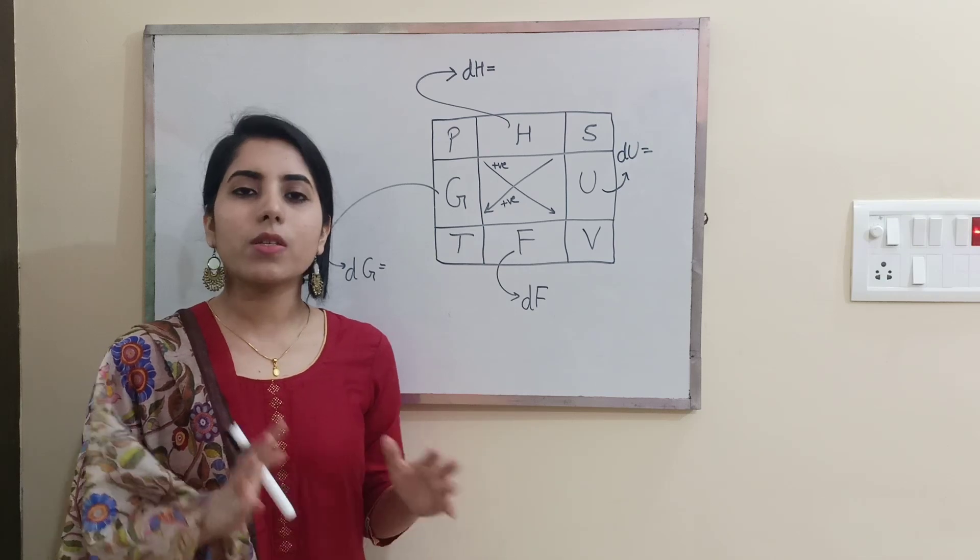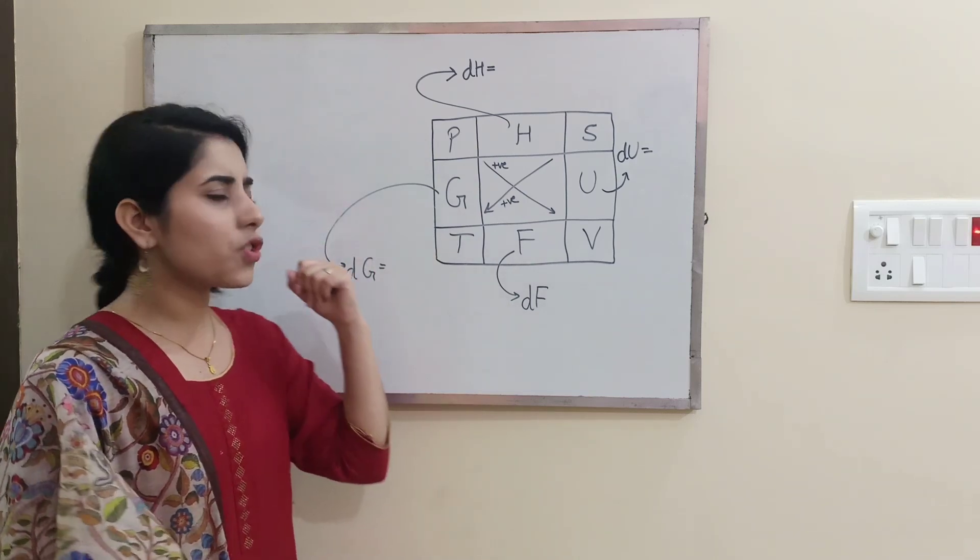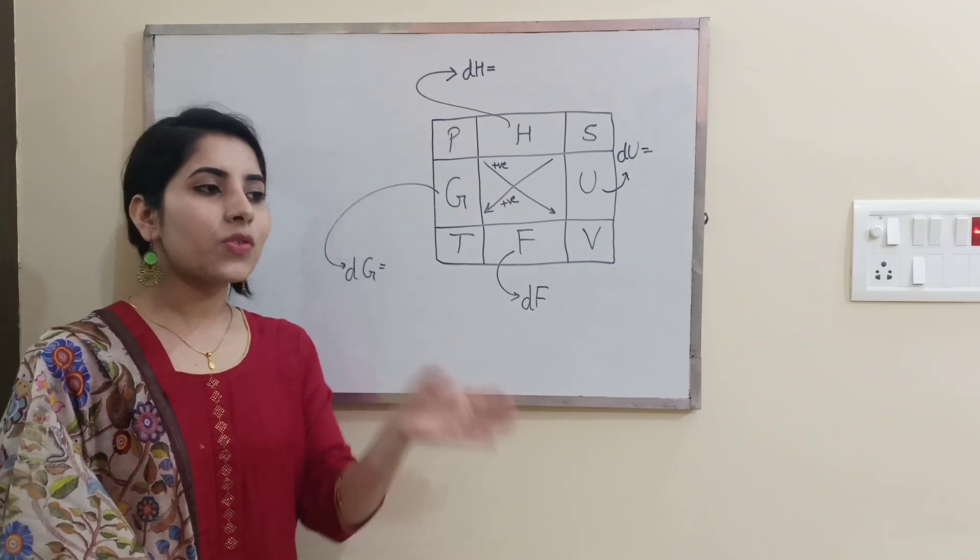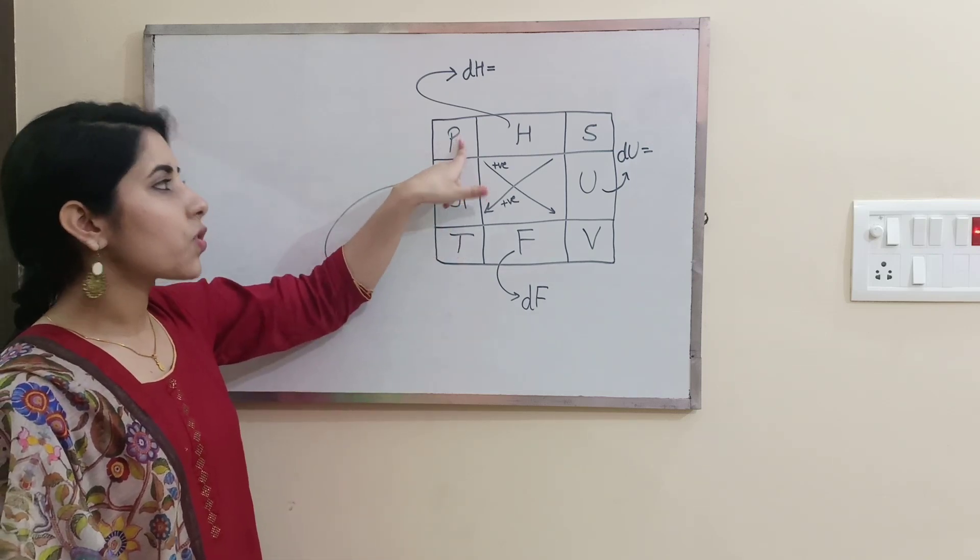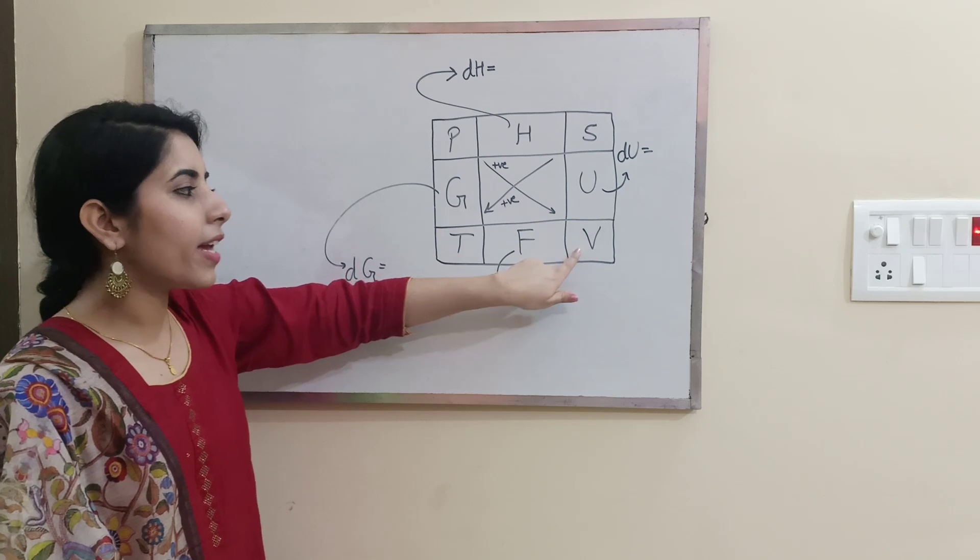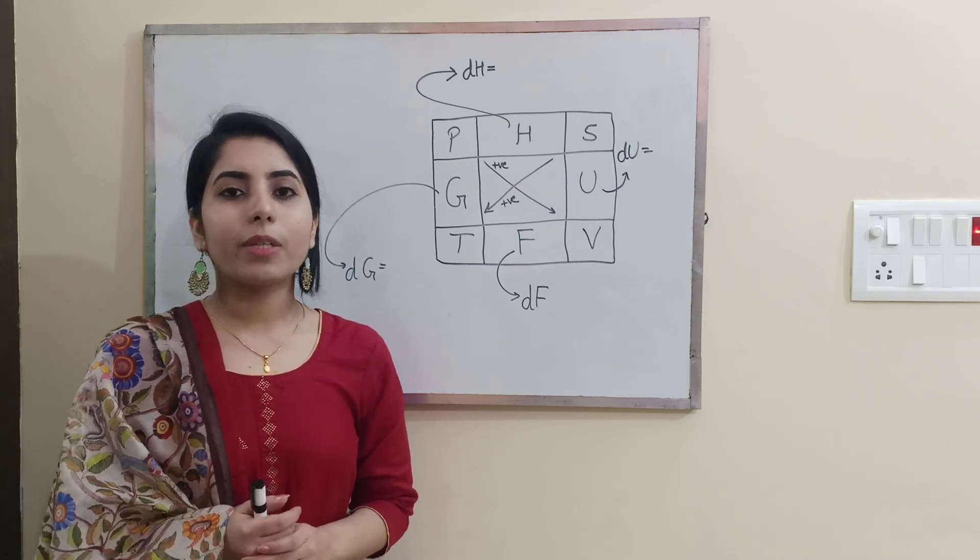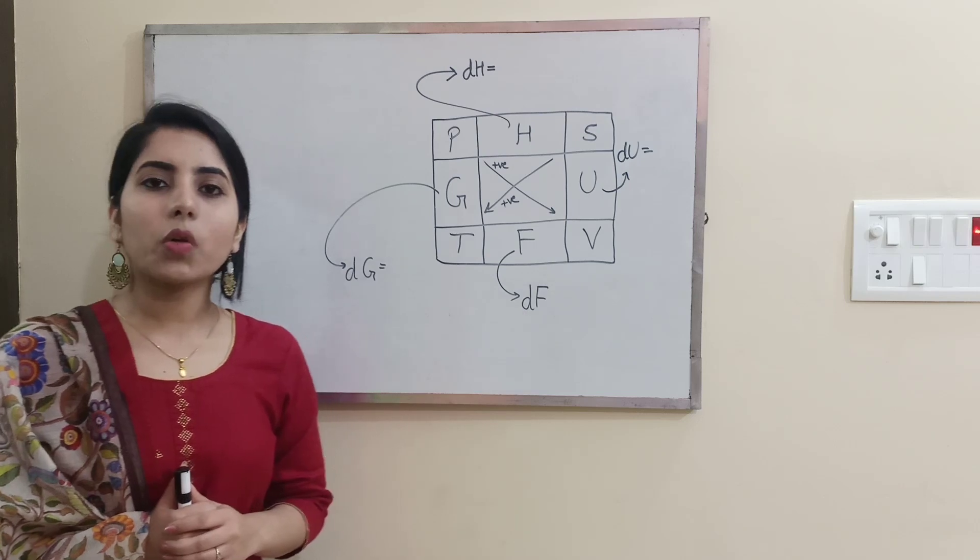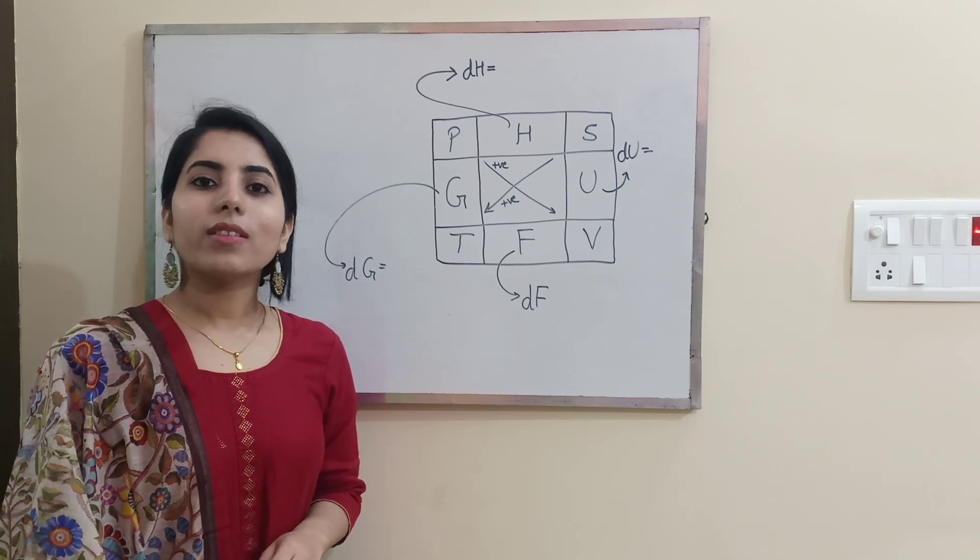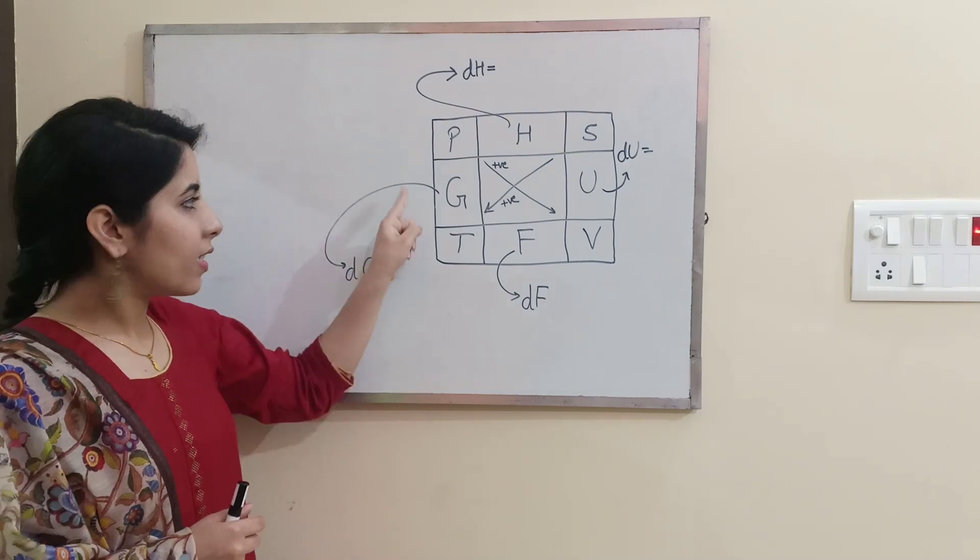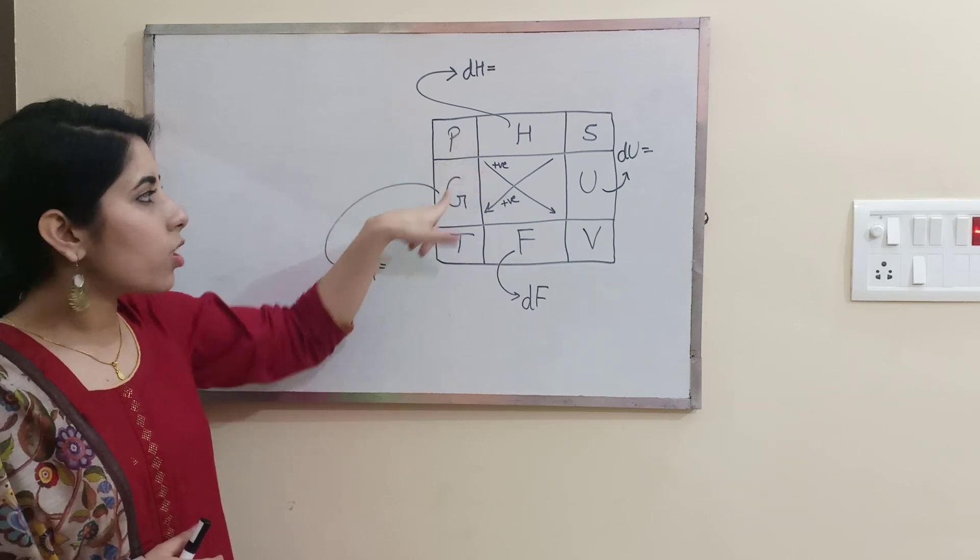To know about this trick, first thing you should know is the sequence how we are going to write these values or expressions. There is a statement which is going to help you: 'great physicists have studied under very fine teachers.' By knowing about this, you will be able to write it in sequence. You should also know about the entry gate for this trick or figure. This is the entry gate, so we will start writing from here 'great physicist' - this is how you need to follow the sequence.